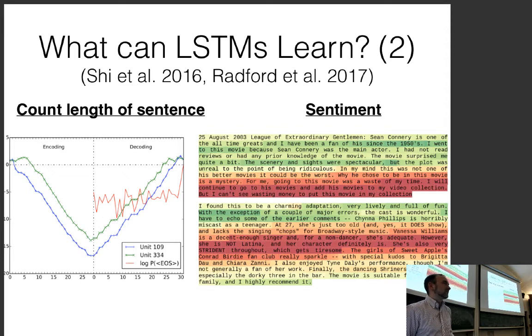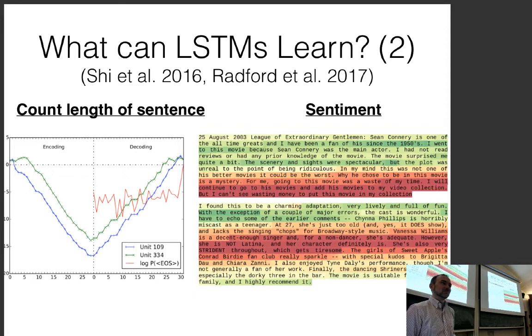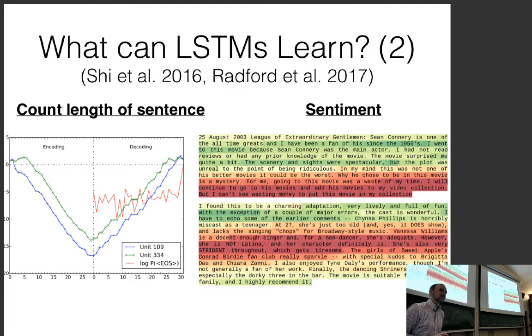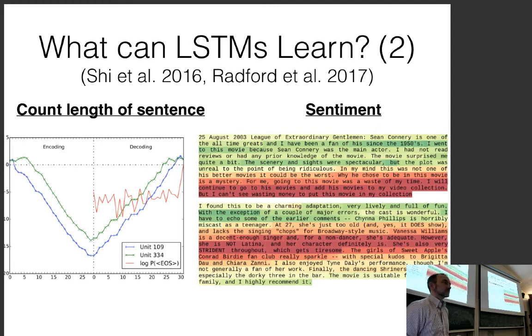Empirically having a forget gate does a lot better. One thing people do is set the bias of the forget gate to one at initialization, so at the beginning of training the forget gate is close to one — you don't forget much. As training progresses, you learn how to forget better. You could think of having the forget gate apply only to half of the nodes in the LSTM as an experiment.